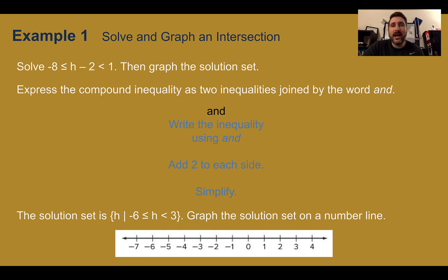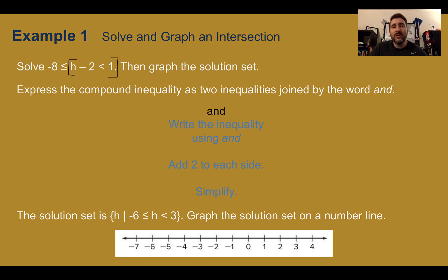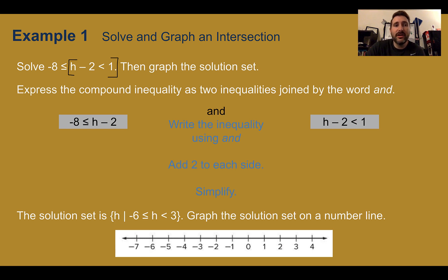Example 1: solve and graph an intersection. Solve negative 8 is less than or equal to h minus 2 is less than 1, then graph the solution set. When you come across something like this where it's all connected together, this is an AND situation — we really have two inequalities. Notice the middle part goes with both ends. To solve this, we write two inequalities and solve them both: negative 8 is less than or equal to h minus 2, and h minus 2 is less than 1.